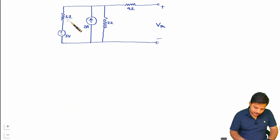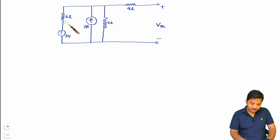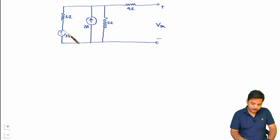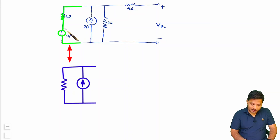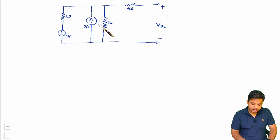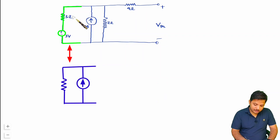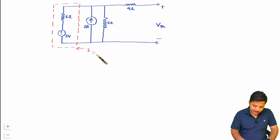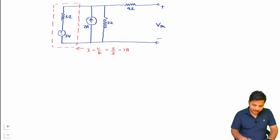Now with this circuit, we have a voltage source in series with a resistor, so we can convert that into a current source in parallel with a resistor. For this voltage-to-current source conversion, the current source I = V/R = 3/3 = 1 ampere, and the resistance is 3 ohms. So we connect a 1 ampere current source in parallel with a 3 ohm resistor instead of this portion of the circuit.